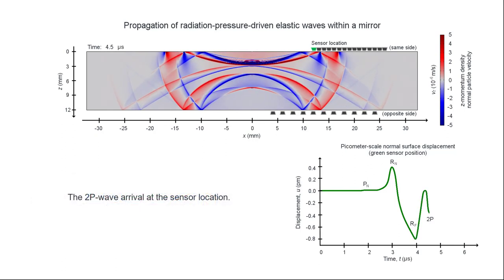The feature here corresponds to the arrival of the primary wave that is reflected from the back of the mirror.